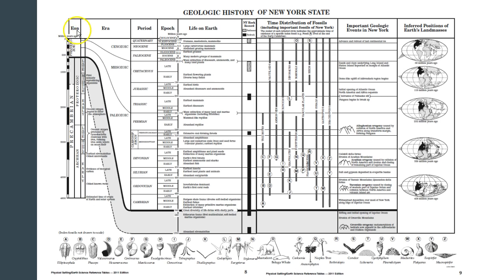Take a look at the top of this reference table page. You have an eon, an era, period, epoch, and these represent the time on Earth. You have life on Earth, New York State rock record, time distribution of fossils, important geologic events in New York, and then inferred positions of Earth's land masses. We're going to go through this and break it down.